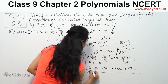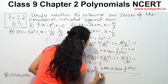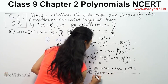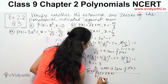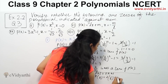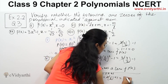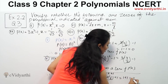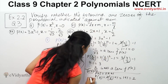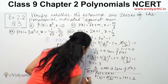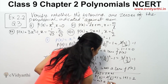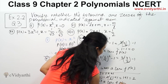Now we will check part number 8. P(x) is equal to 2x plus 1. We check x equal to 1 by 2. Substituting gives 2 times 1 by 2 plus 1, which equals 1 plus 1 equals 2. Since the result is not zero, 1 by 2 is not a zero of p(x).